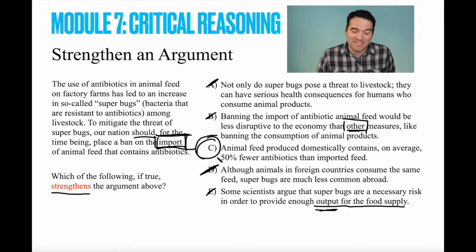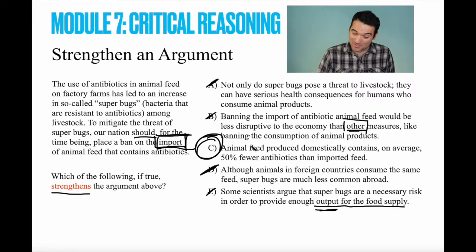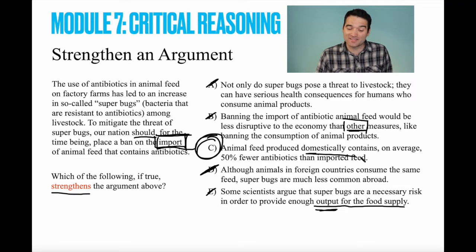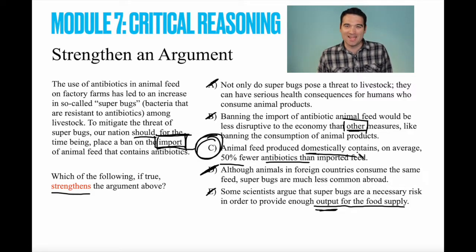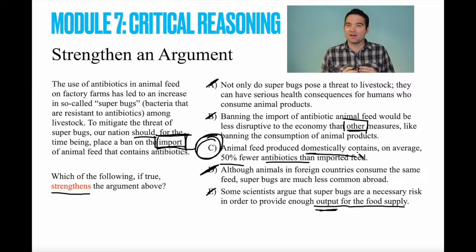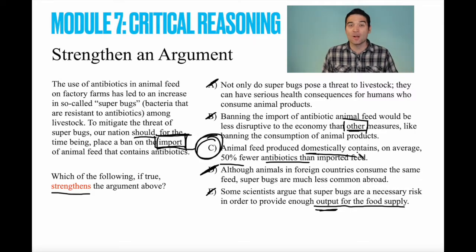Answer C does that — it provides that bridge. Answer C says animal feed produced domestically contains 50% fewer antibiotics than imported feed. So domestic feed is safer, and therefore we should ban foreign animal feed. Now, this doesn't make the argument airtight or a perfect argument, but it does make it stronger by addressing one of its weaknesses.